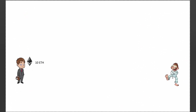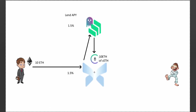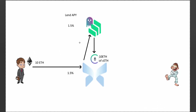So here we have Dollar Bill and Boosted Bill. Dollar Bill has some ETH he wants to lend, so he comes to Morpho and lends his 10 ETH. Morpho takes his 10 ETH and puts it into Compound and gets the C tokens — 10 ETH worth of C tokens into their contracts. Dollar Bill gets to choose which protocol he wants to interact with, like Morpho and Compound, or Morpho and Aave. At this point Dollar Bill is earning 1.5%, which is the lending APY listed on Compound.